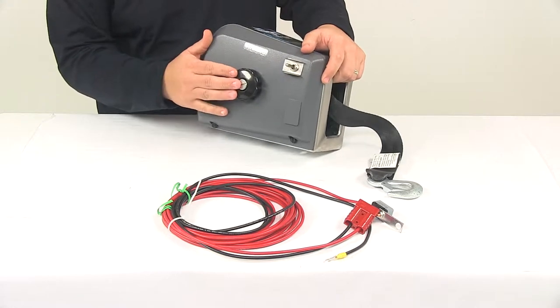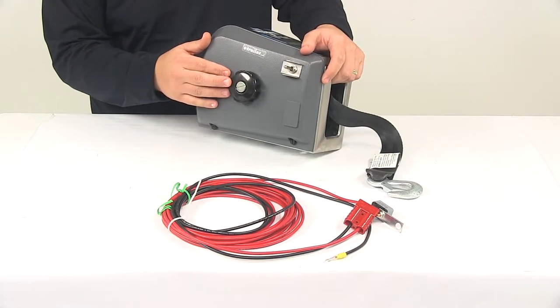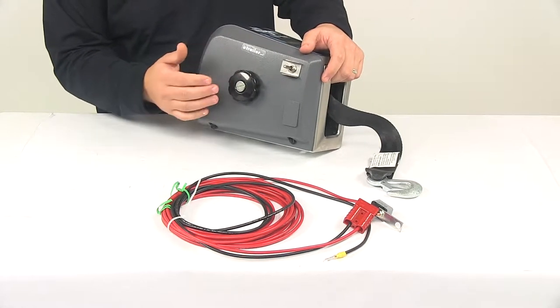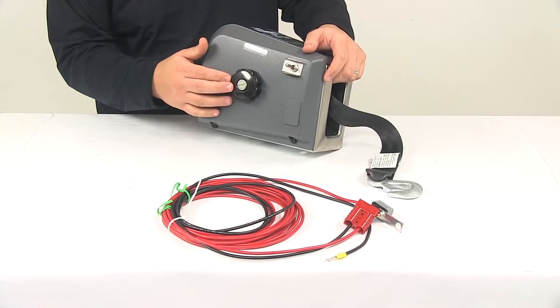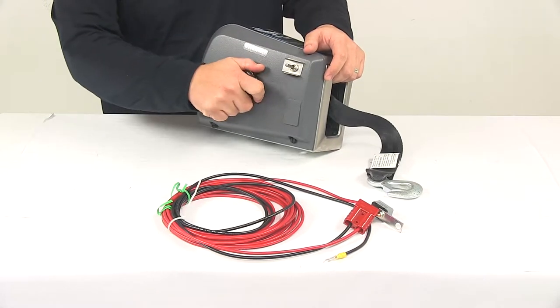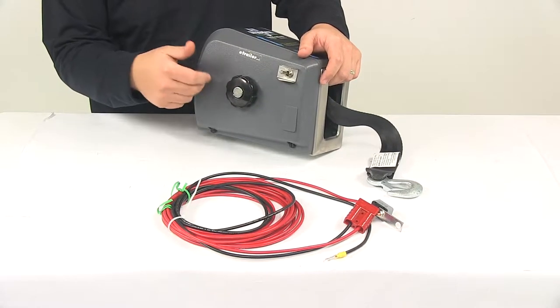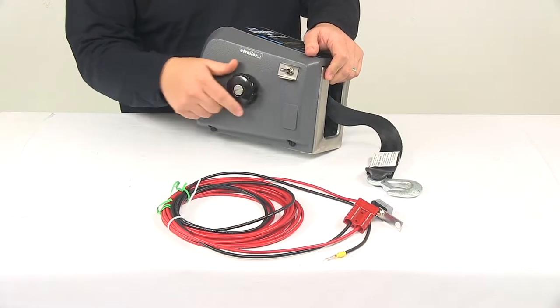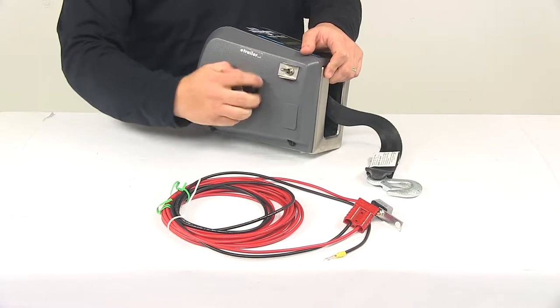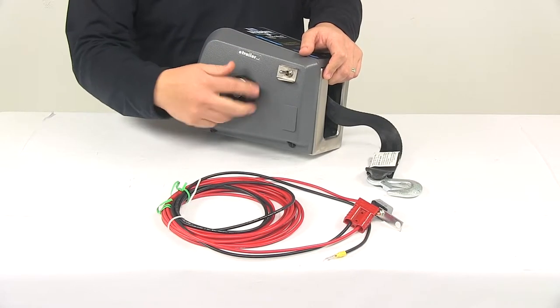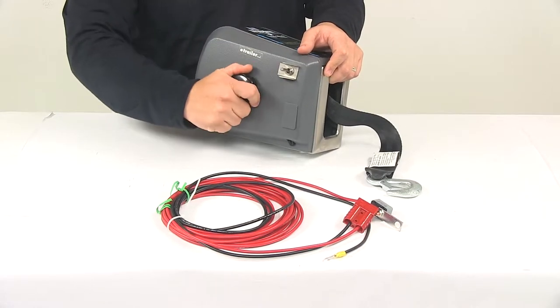It also features a free wheel out clutch that allows the strap to be extended out by hand. The control knob is easily accessible here on the side. Right now it's tightened, which means it's in the engaged position, ready for winching. If you want to move it to free spool mode, just turn that counterclockwise and that will allow you to extend the strap out as needed.